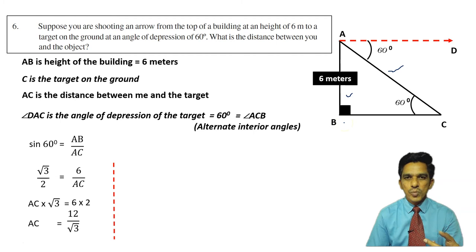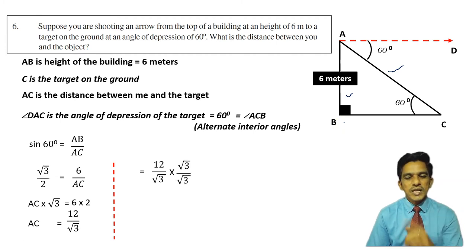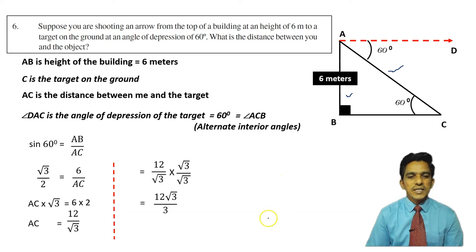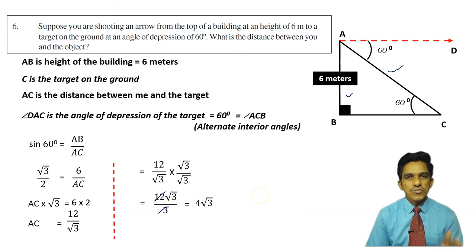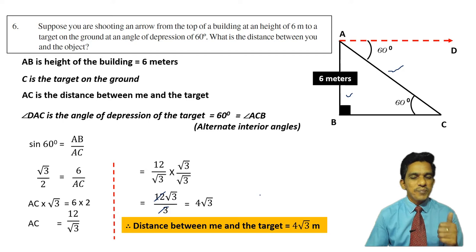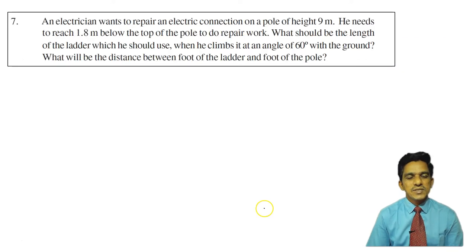Now let us rationalize. Multiply both numerator and denominator by root 3. You have 12 root 3 by root 3 into root 3. That is 12 root 3 by 3. Cancel: 3 goes into 12 four times. So AC is equal to 4 root 3. Therefore the distance between me and the target is equal to 4 root 3 meters.